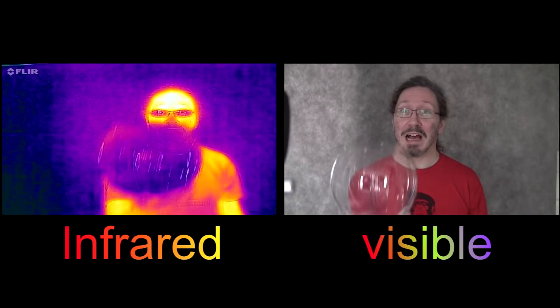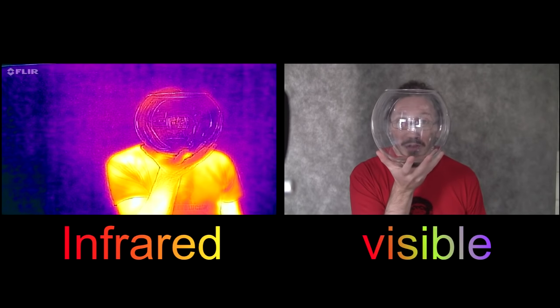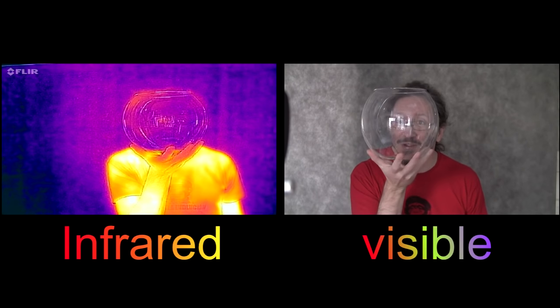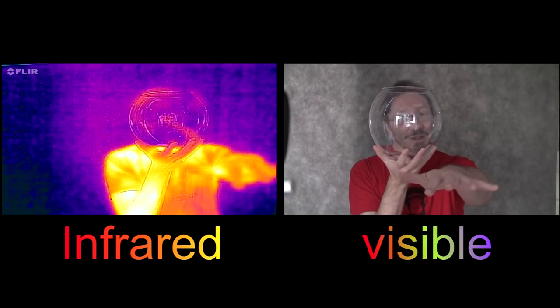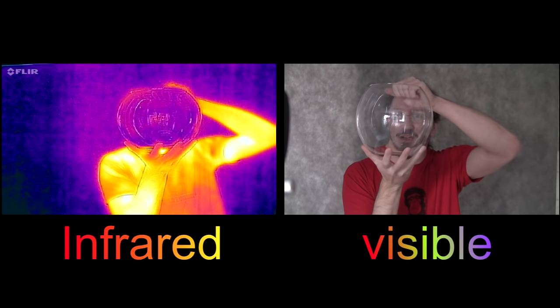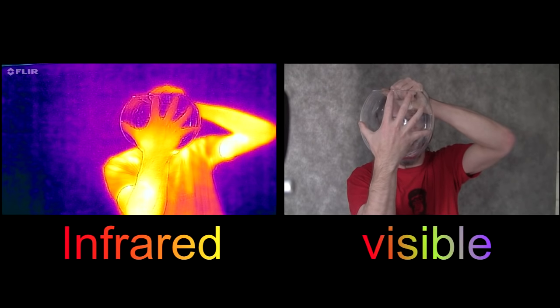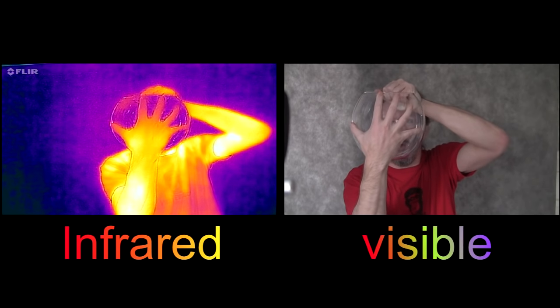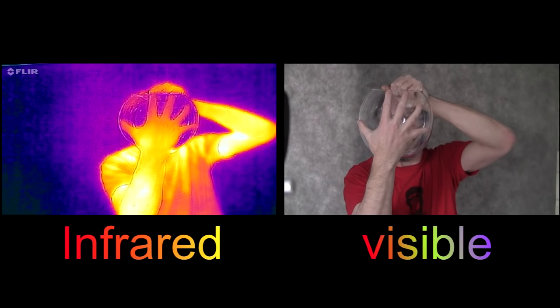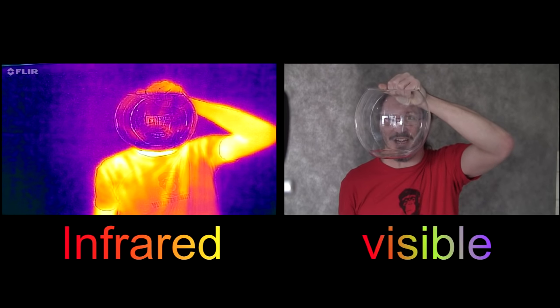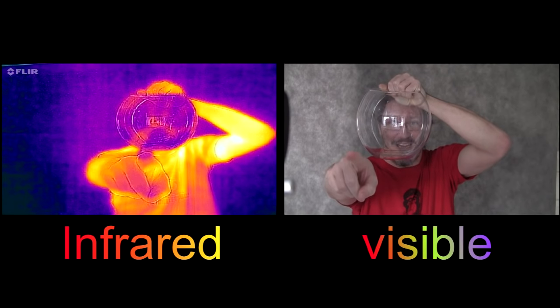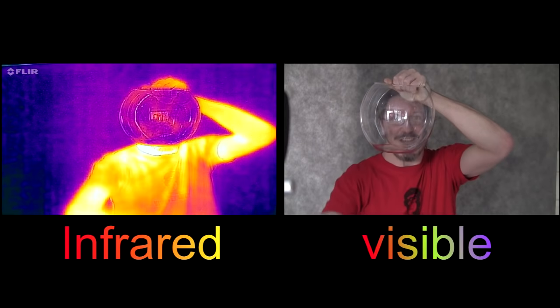One last one. Glass, as you can see, is beautiful and transparent in the visible. In the infrared, not so much. But again, because it's essentially opaque in the infrared, if I put my nice warm hand on the glass, you can see where my hand's been in the infrared, and not so much in the visible.